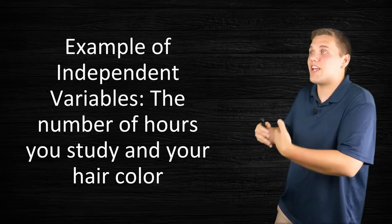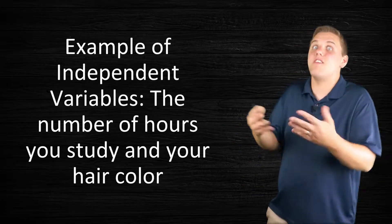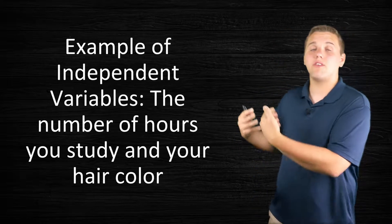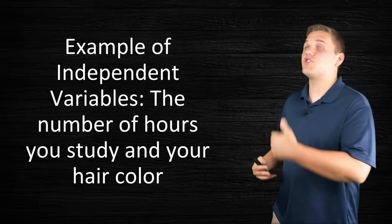Here's an example of some variables that are independent of each other, meaning they have nothing to do with each other. The first variable is the number of hours that you study, and the second variable is your hair color.